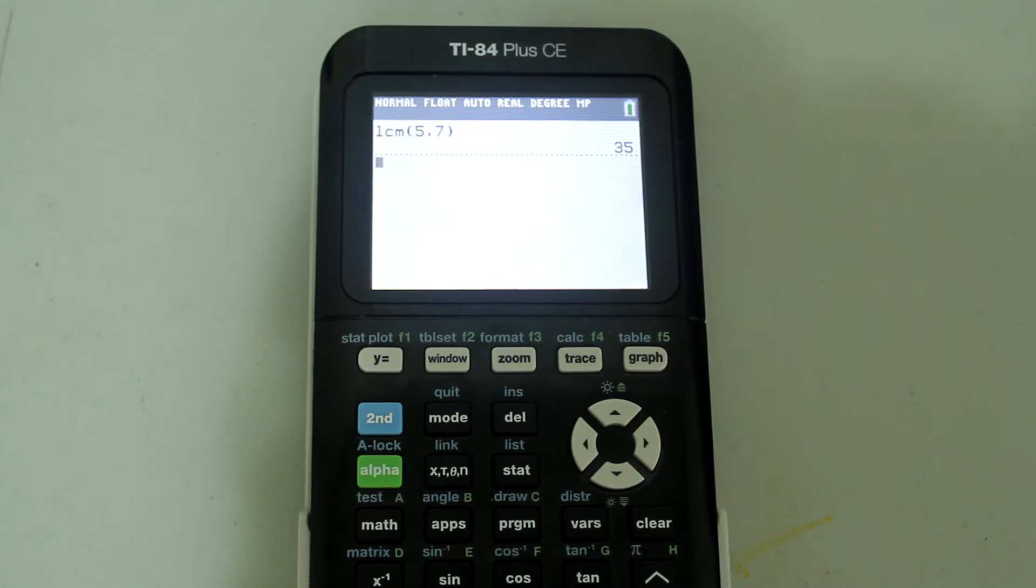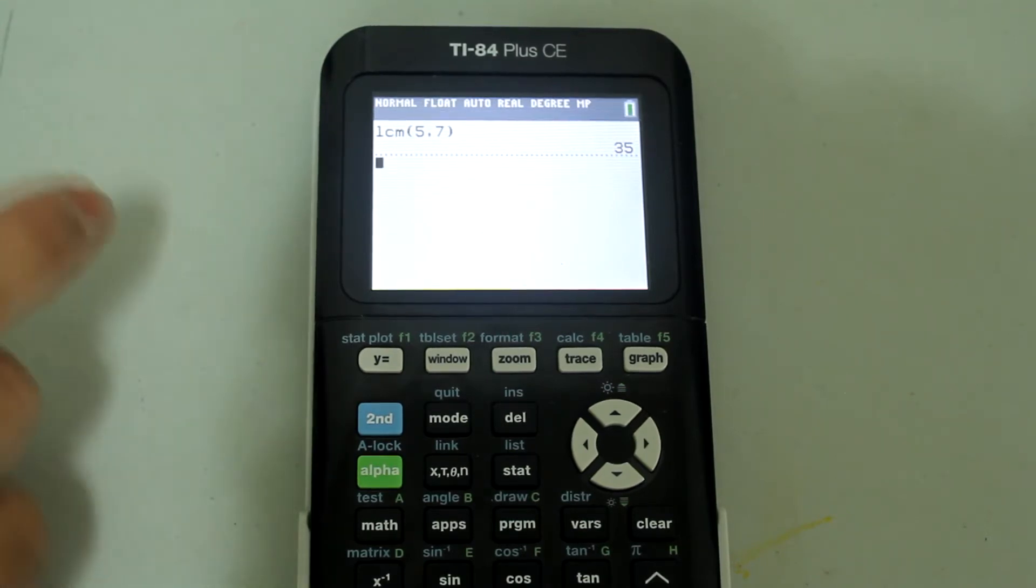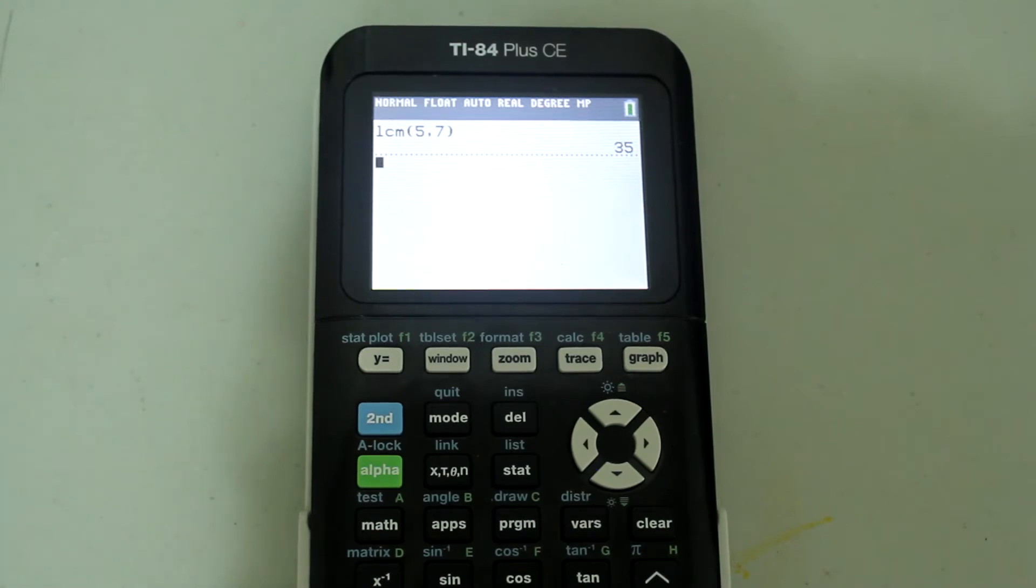Now it's important to note that the LCM option only lets you find the least common multiple for two numbers at a time. What I mean by that is let's try 5, 7 and 8. Let's try and find the least common multiple for all three numbers.